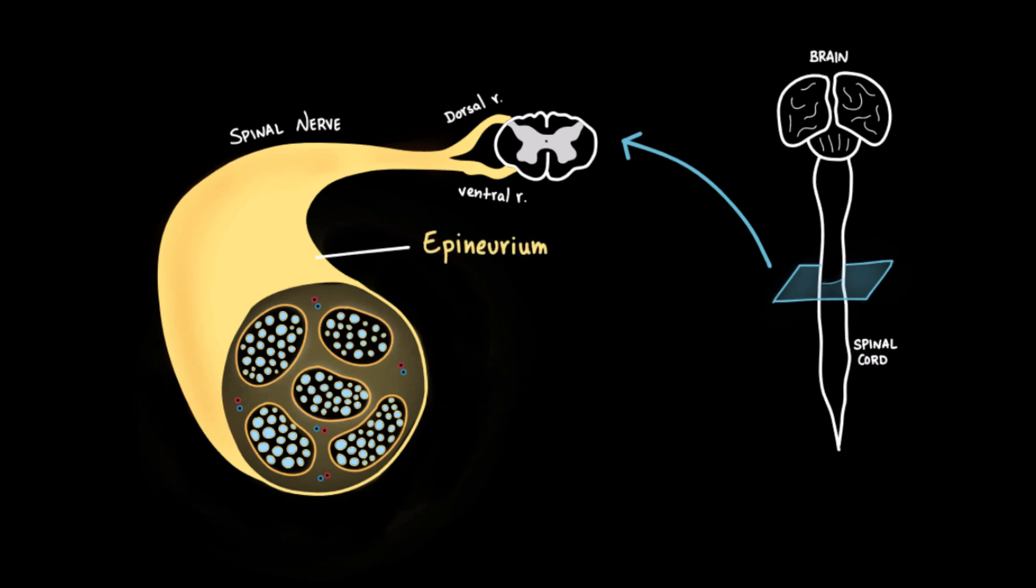The outermost layer is the epineurium, which holds the entire nerve together. Inside the nerve, fibers are grouped into bundles called fascicles, and each fascicle is surrounded by the perineurium, the second layer of connective tissue. Finally, within each fascicle, every individual axon is wrapped around by the endoneurium.